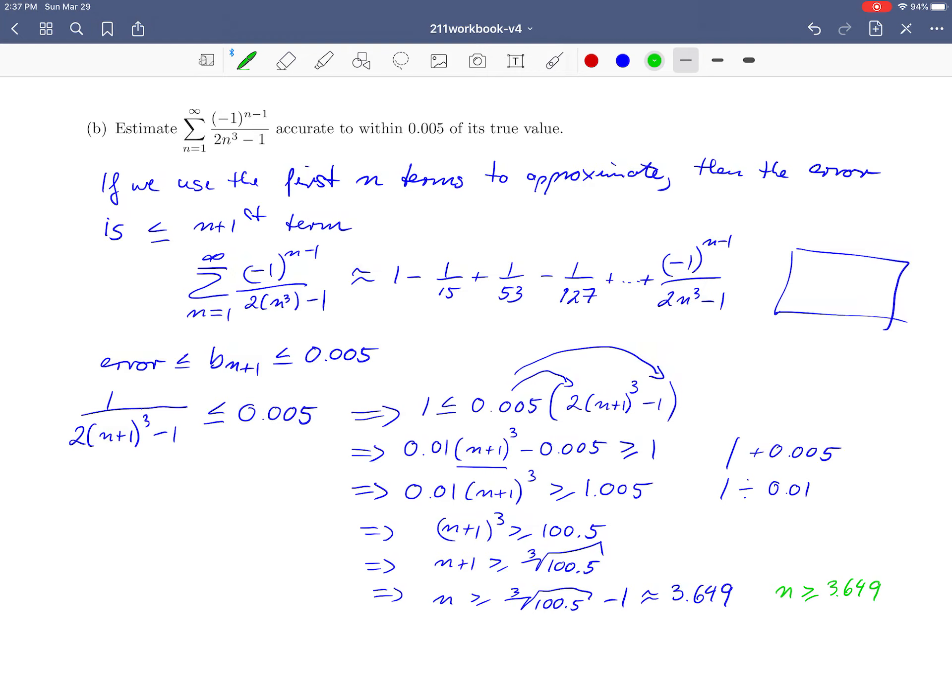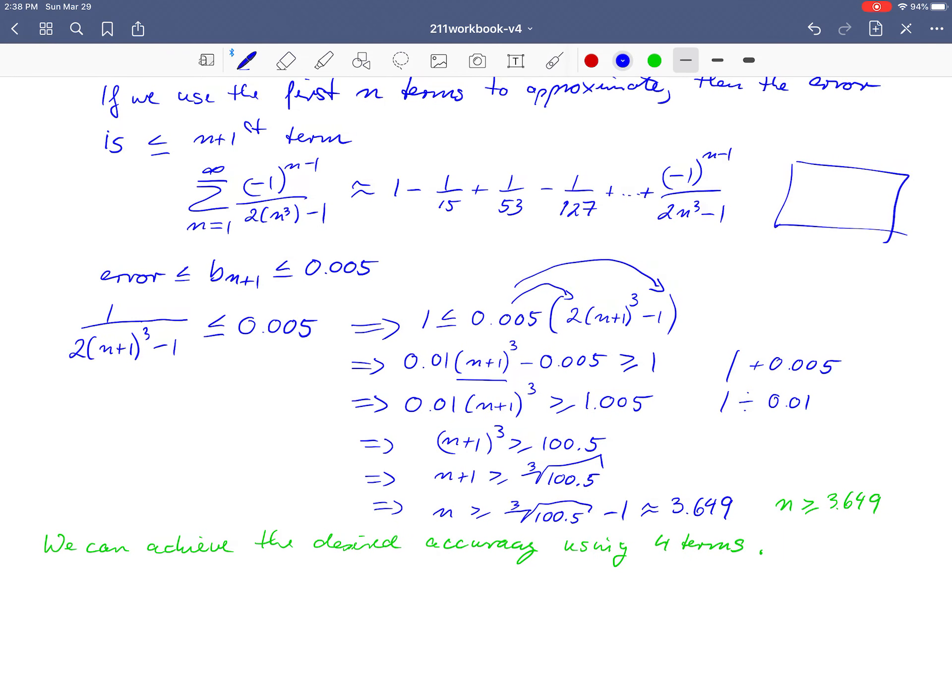So what does this mean now? So we have that n has to be greater or equal to 3.649. n represents the number of terms that we need, so that the value of our sum is within a certain error of the true value of our series. And so n has to be greater or equal to 3.649. n also has to be a whole number because we only have 1, 2, 3, 4, 5 terms. And so what this is telling us is that we need 4 terms to reach the desired accuracy. So our conclusion is we can achieve the desired accuracy using 4 terms.